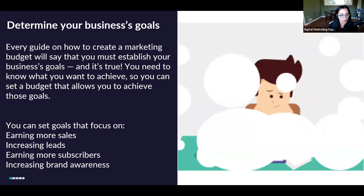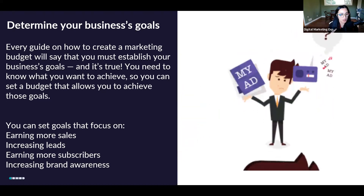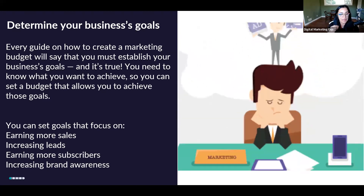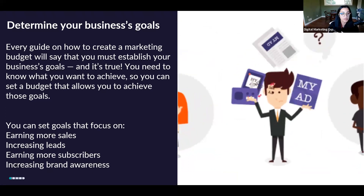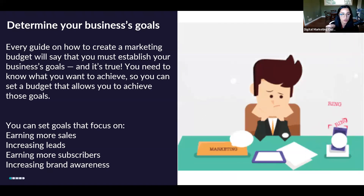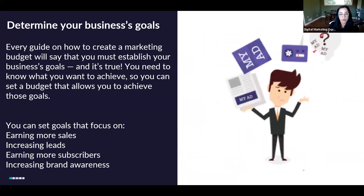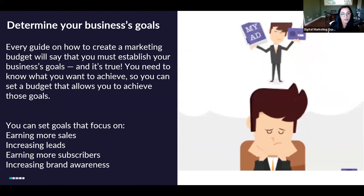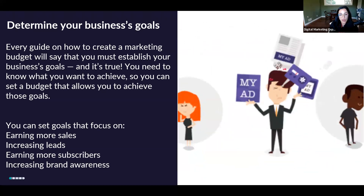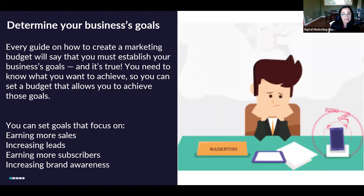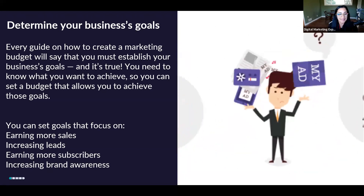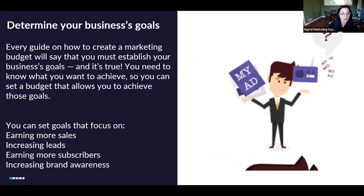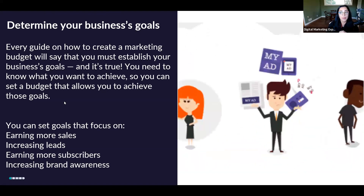So we're going to set goals for what we want to achieve in the next three to five months maximum. Here are the main goals to consider: earning more sales, increasing your leads — these are people you want to get as customers — earning more subscribers, or increasing brand awareness. I personally rarely recommend increasing brand awareness for small businesses, mainly because awareness is something we create when we want people to know we exist, but that's not good enough. We want sales and leads, so those should be your number one and two priorities.